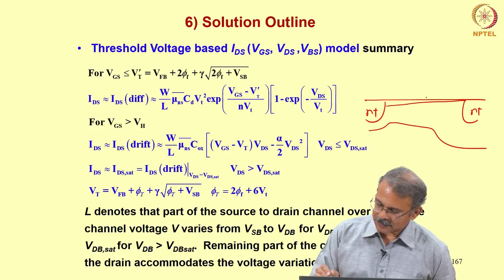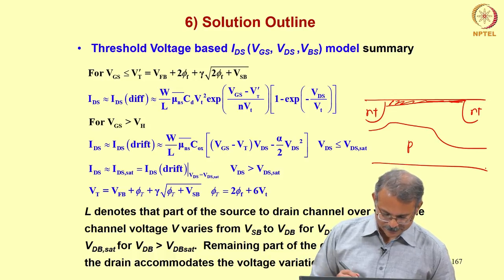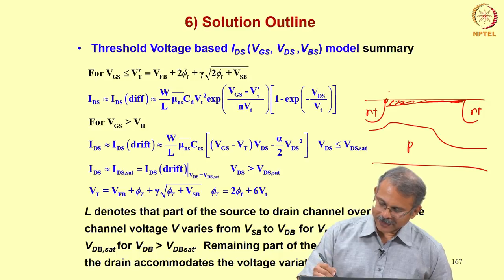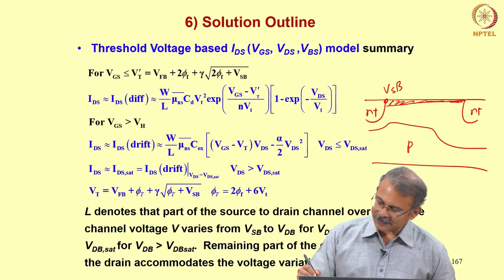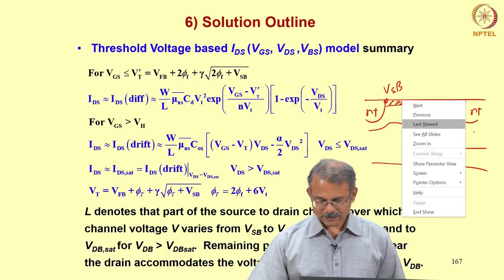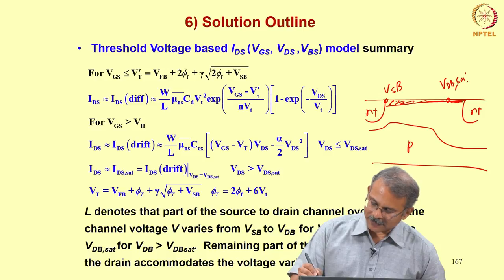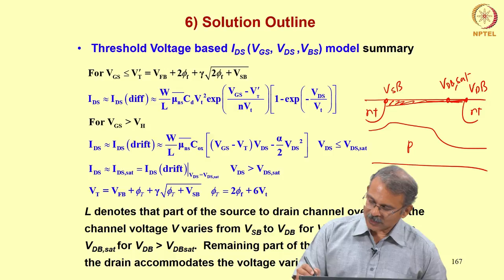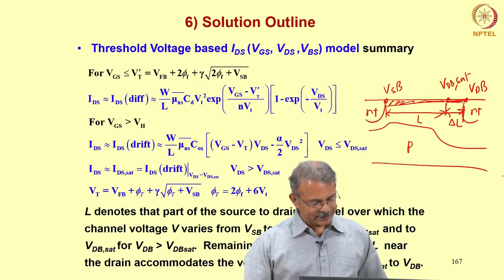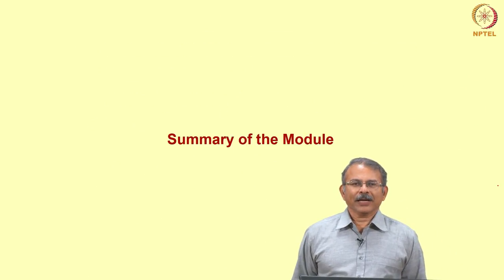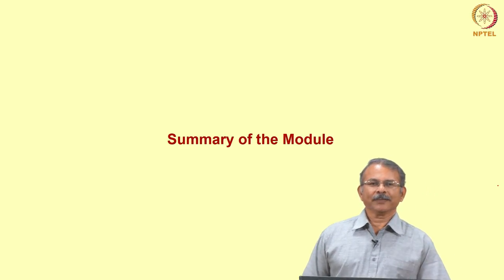In the MOSFET structure, the channel voltage is Vsb here at the source and Vdb at the drain if Vdb is less than Vdb_sat. But if Vdb exceeds Vdb_sat, then Vdb_sat comes here and the difference between Vdb and Vdb_sat falls across delta-L. That is the interpretation of channel length. With that we have completed our module on surface potential based and threshold based model expressions.